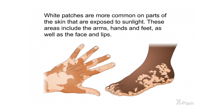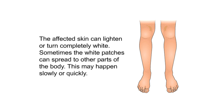White patches are more common on parts of the skin exposed to sunlight, including the arms, hands, and feet, as well as the face and lips. The affected skin can lighten or turn completely white. Sometimes the white patches can spread to other parts of the body, either slowly or quickly.